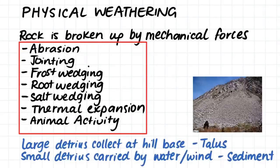Physical weathering, which is sometimes referred to as mechanical weathering, is when rock is broken up by mechanical forces. These mechanical forces include abrasion, jointing, frost wedging, root wedging, salt wedging, thermal expansion, and animal activity. I will be explaining all of these mechanical forces in this video. Once the weathering has occurred we end up with detritus, and this detritus is collected through gravity and the forces of wind and water.